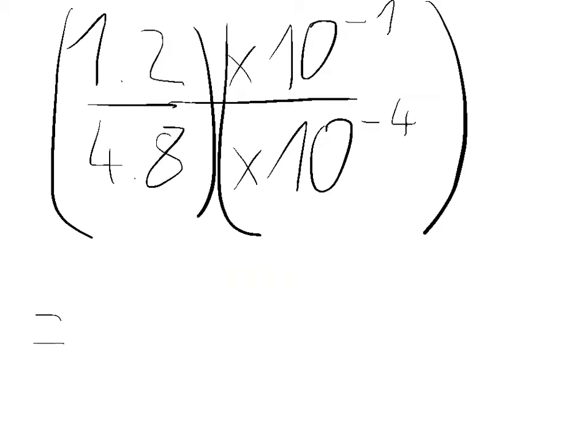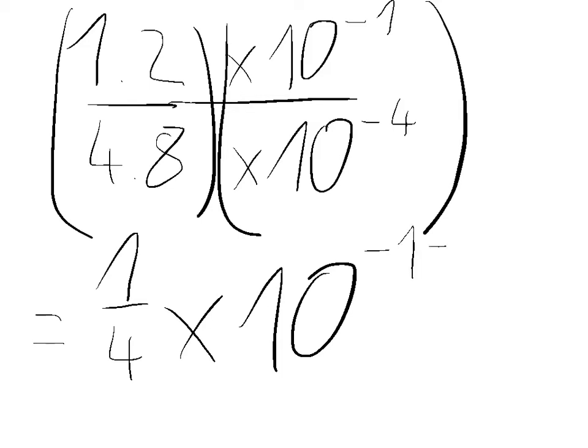So now we take our equation and first we divide 1.2 by 4.8 which is 1 over 4. And then we take this part and we subtract the two exponents because it's a division. So we get times 10 to the negative 1 minus negative 4.